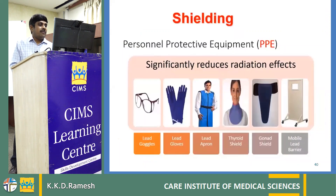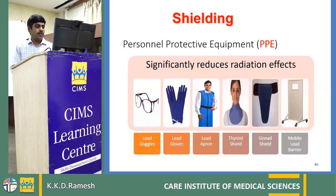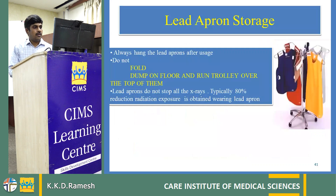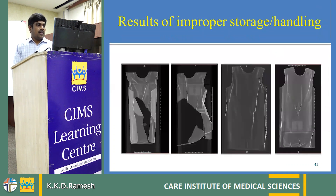We have sufficient personal protective equipment (PPE) such as mobile lead barriers, gonadal shields, thyroid shields, and lead aprons. Do not fold or dump your lead aprons on the floor — always hang them on a hanger after use. This is the result of improper storage and handling of lead aprons.